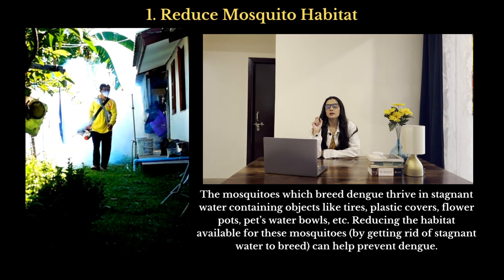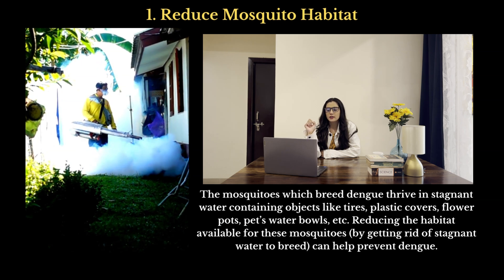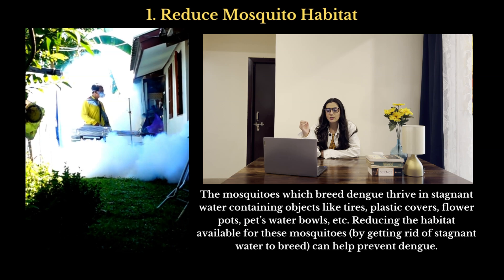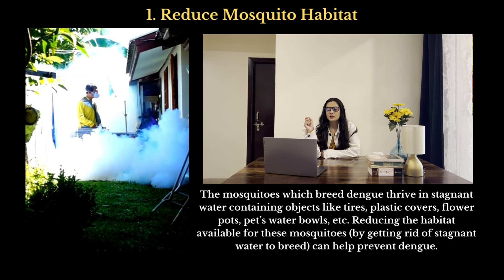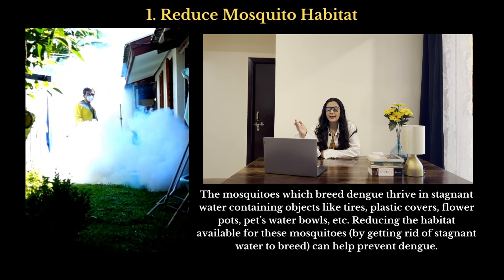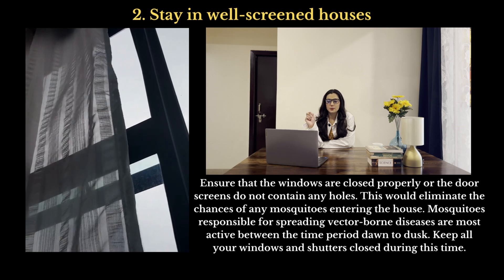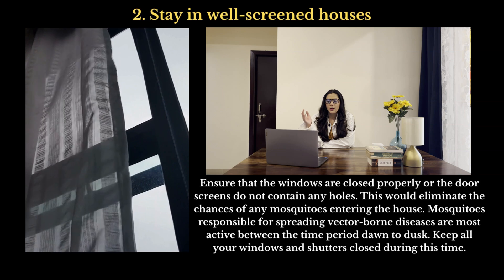Now let's come to the most important topic: prevention. Here are eight preventive measures for dengue that are simple and effective. Number one is to reduce mosquito habitat. The mosquitoes that breed dengue thrive in stagnant water in objects like tires, plastic covers, flower pots, and pet water bowls. Reducing available habitat by getting rid of stagnant water can help prevent dengue.